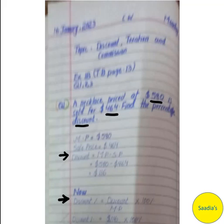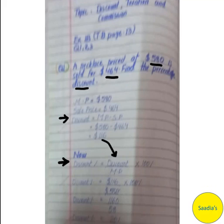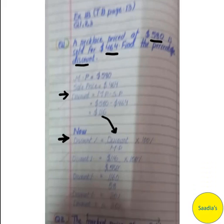Mark price is $5.80, sale price is $4.64, so discount equals mark price minus sale price: $5.80 minus $4.64, which gives $1.16 as the discount. Now we plug in this discount value: percentage discount equals $1.16 divided by $5.80 multiplied by 100%, which gives us 20%.